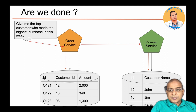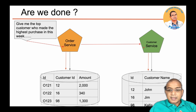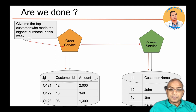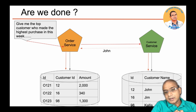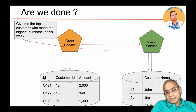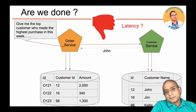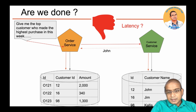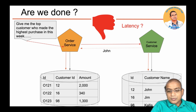So what can we do? The order service can directly call the customer service and say: give me the customer name for ID 12. That way we can retrieve the customer name, and this is the most appropriate way of retrieving data between two microservices. But there is still a problem: latency. In this example we took only one customer — imagine you have to do this for 10 million customers. So what is the solution for this latency problem?